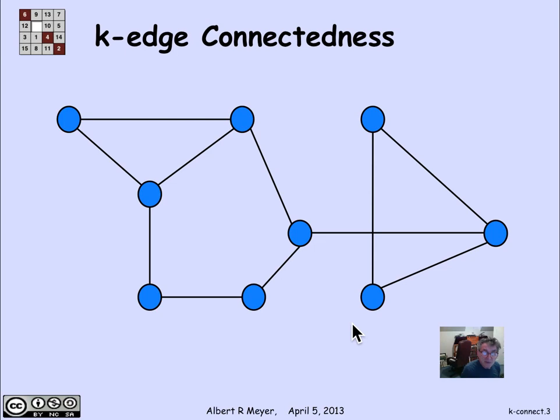Let's look at an example. So here's a graph. And let's focus on those two vertices that I've highlighted in magenta. They are one edge connected because they're connected. And if you remove one edge, they become disconnected. So they're one edge connected, but they're not two edge connected.